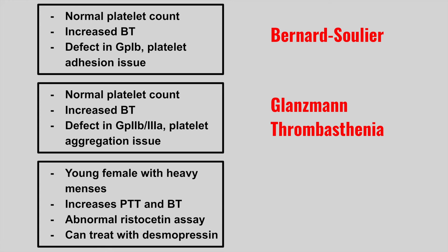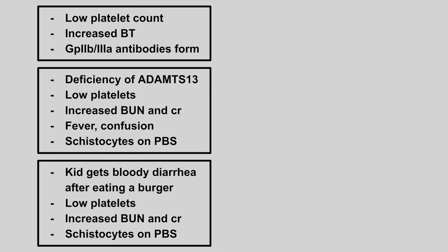Next, we have a young female with heavy menses, an increased PTT and bleeding time, an abnormal ristocetin assay, and it can be treated with desmopressin. This is von Willebrand's disease. Von Willebrand factor has influence on platelets and on factor 8, which is why both bleeding time and PTT increase. Desmopressin helps by increasing factor 8 activity.